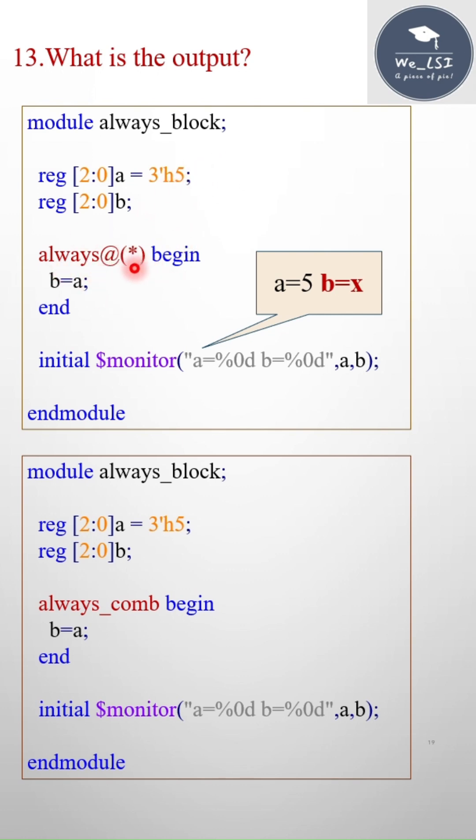This always block will be waiting until the changes occur on the signal inside the sensitivity list. But if you see the second example, here I will get a equals to 5, b equals to 5.